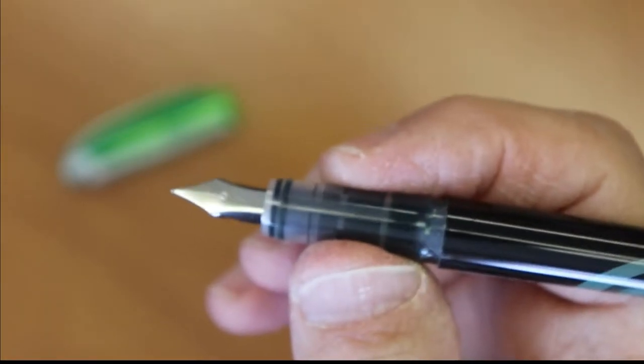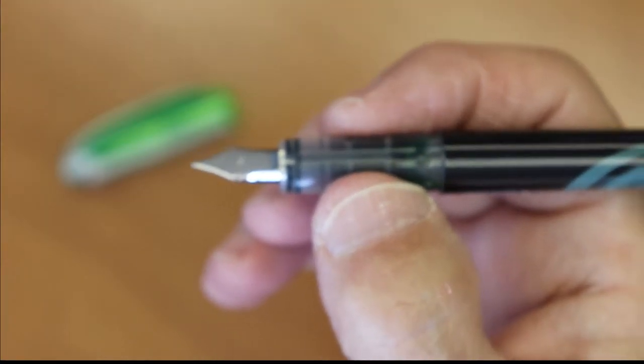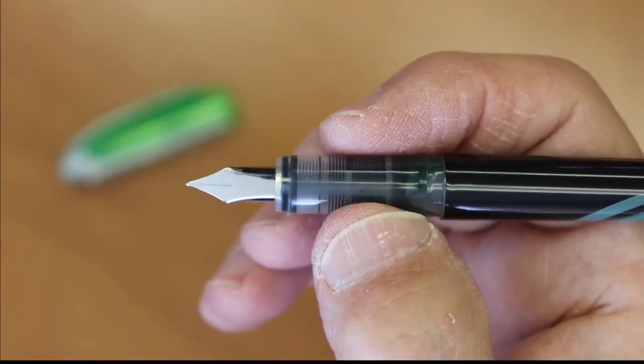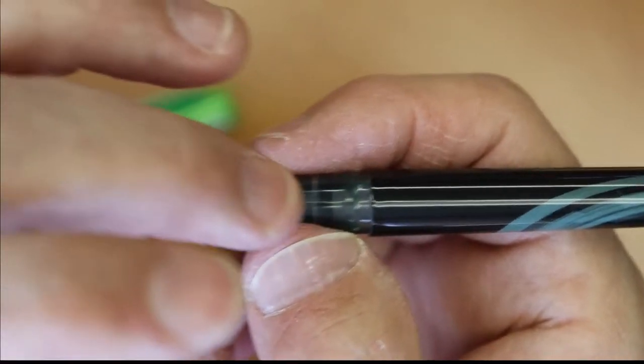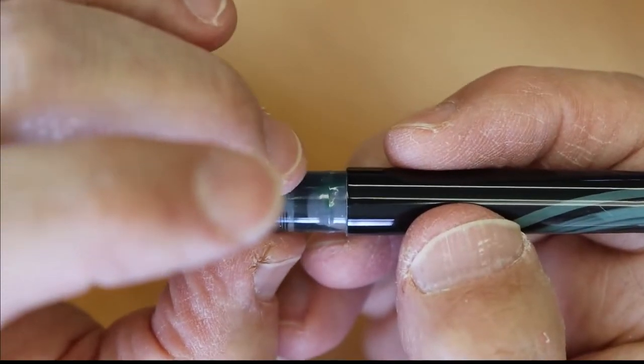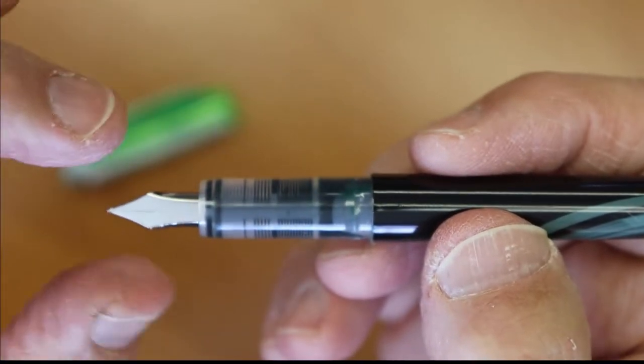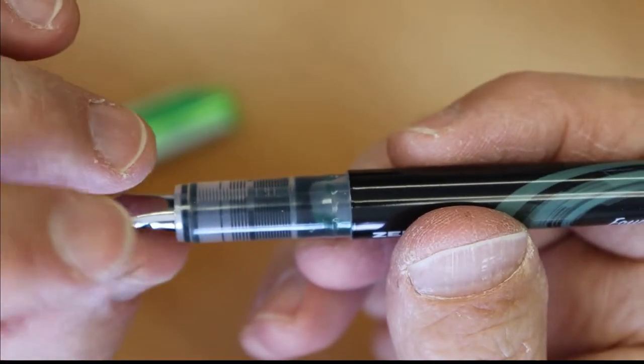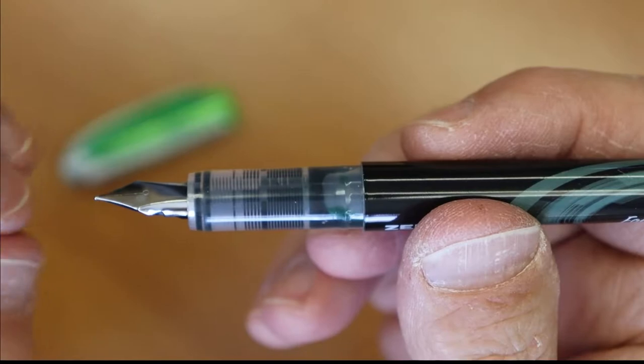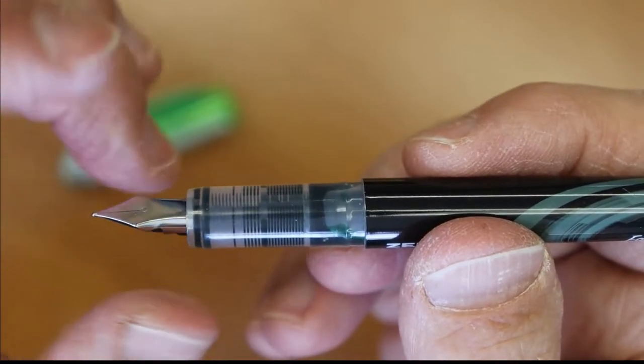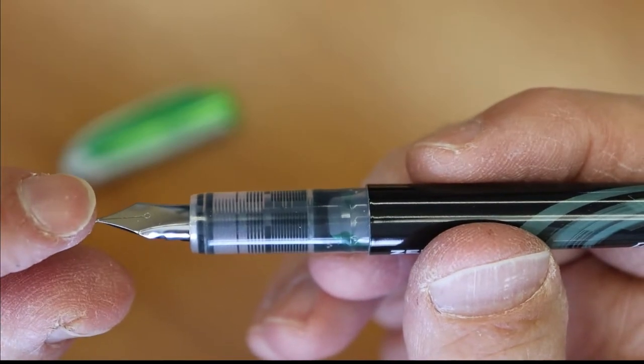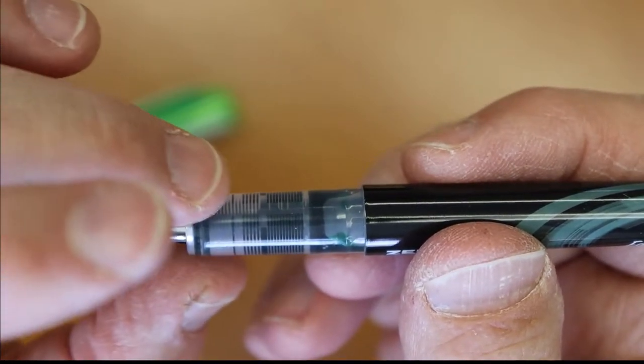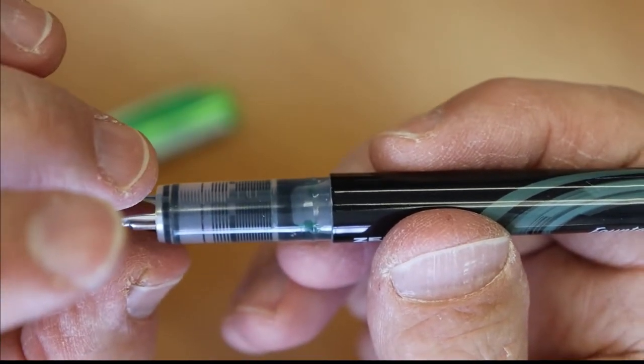I'm wondering if you'd even be able to do it with the Zebra because on the Pilots I know some people have been able to remove the feed out of there. They kind of twist on this and it'll come loose, but the end here tapers down on this one, so I don't know.